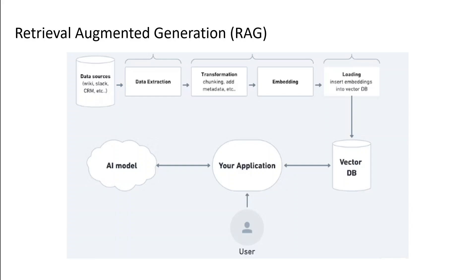Then we transform this data — transforming means we may be adding some labels, adding some metadata, or chunking it. Chunking means that from a phrase or sentence, we identify which one is a noun, which one is a verb, and so on. Once we have transformed that data, we use something called embedding. Embedding is a process by which the input text is given a numerical representation in vector space.